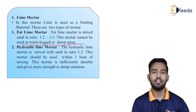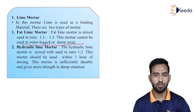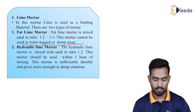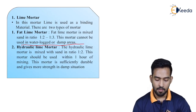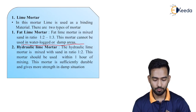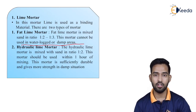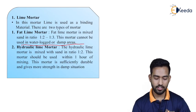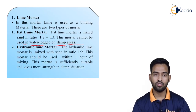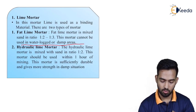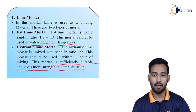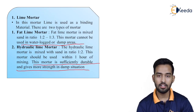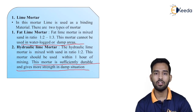The second type is hydraulic lime mortar. There are two types of lime — fat lime and hydraulic lime — so the mortar is divided into two subcategories. In hydraulic lime mortar, the hydraulic lime is mixed with sand in the ratio of 1:2. This mortar should be used within one hour of mixing. The mortar is sufficiently durable and gives more strength in damp situations, unlike fat lime mortar which cannot be used in damp situations.